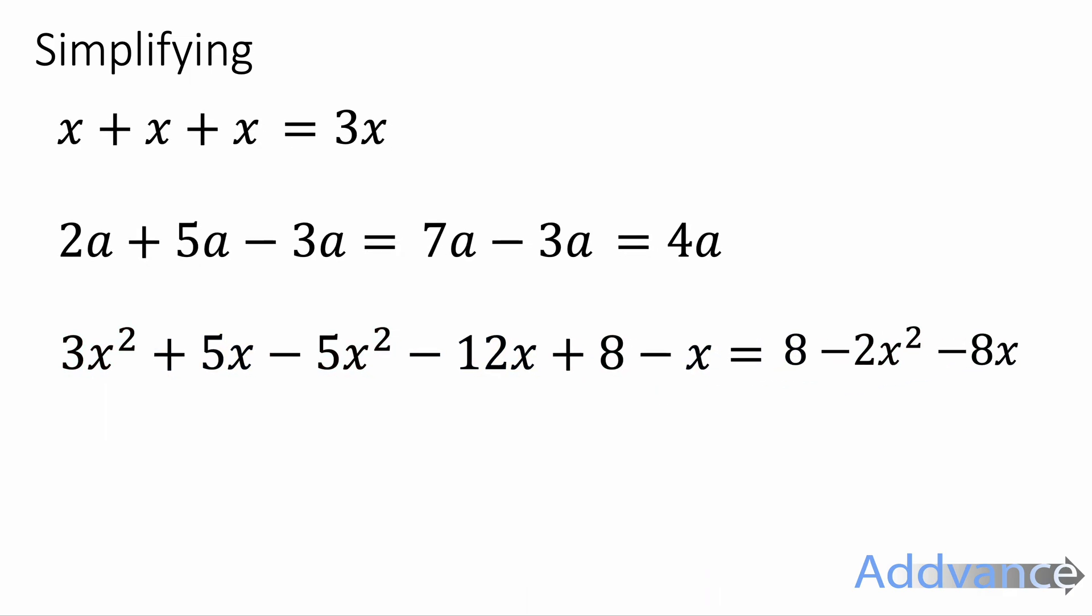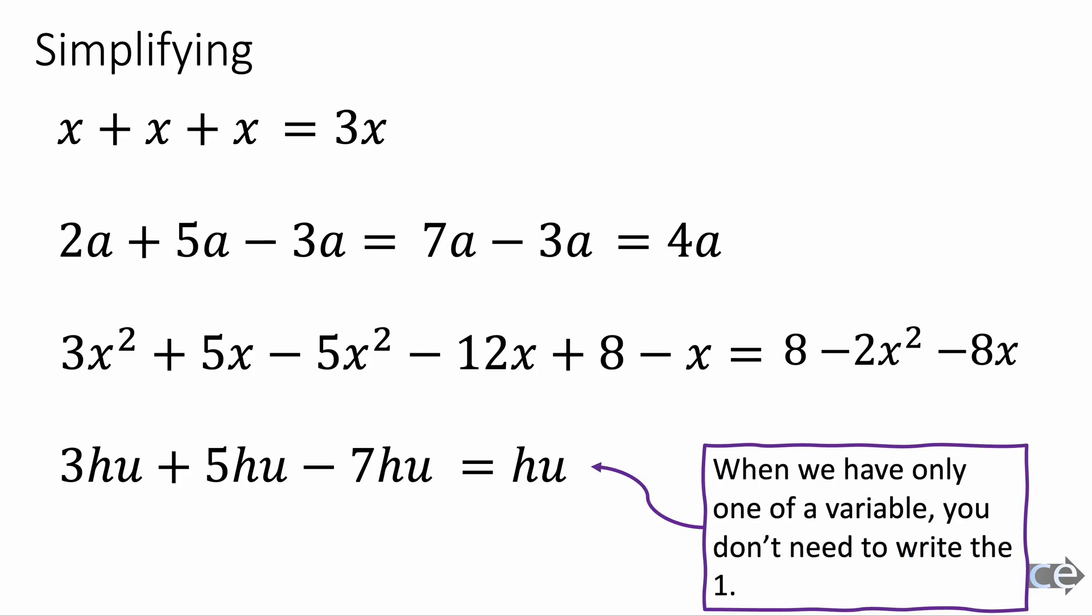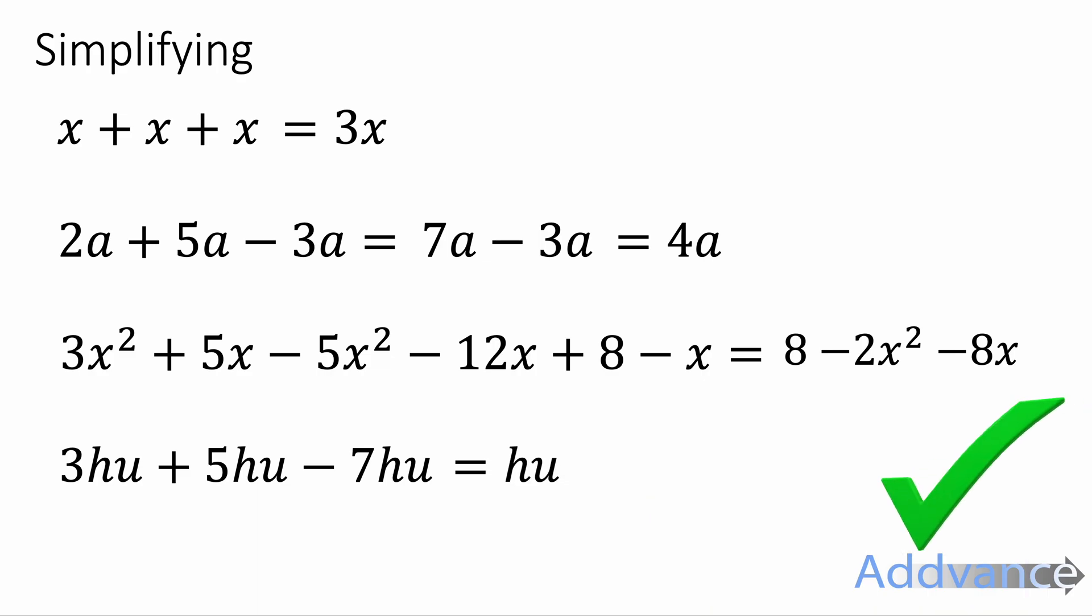Now we've got 3hu plus 5hu minus 7hu. Well, 3hu plus 5hu is 8hu, and we subtract 7hu is 1hu. However, in algebra, if you've got 1 of something, we just write it as hu. So 1hu, we just write as hu. When we only have 1 of something, we just write it without the 1.